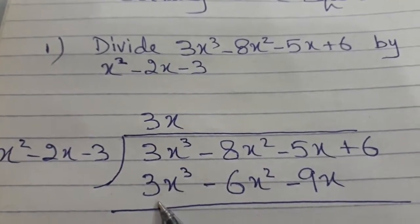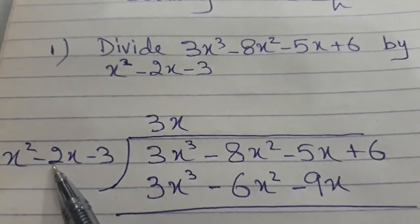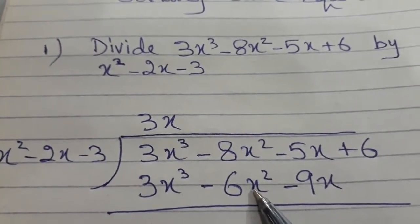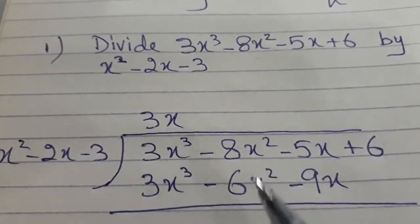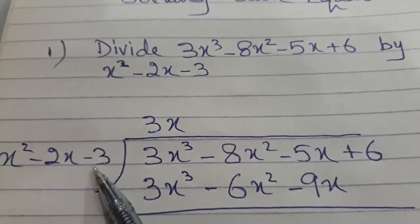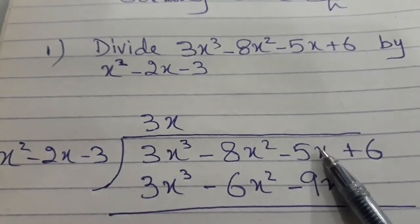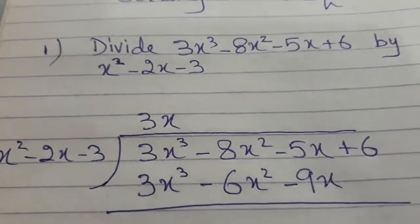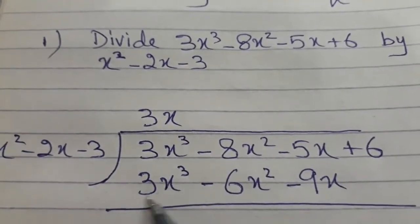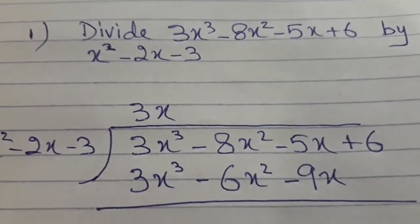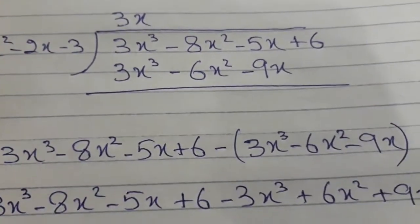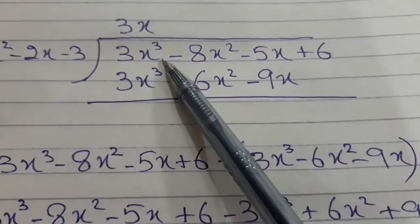Now the second term: minus 2x multiplied by this will become minus 6x squared. We write like terms under the same term — x squared goes here. Then minus 3 multiplied by 3x will be minus 9x, written under the term with x to the power 1. Now we will subtract — just like we do in the number system.